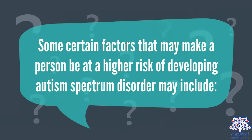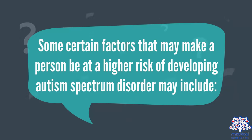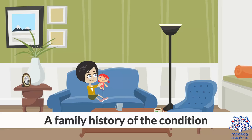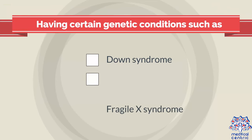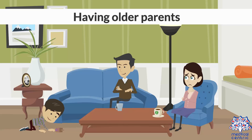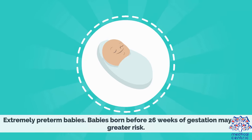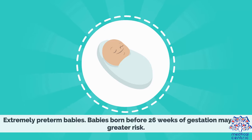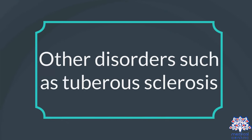Some factors that may put a person at higher risk of developing autism spectrum disorder include: a family history of the condition, being male, having certain genetic conditions such as Down syndrome, Fragile X syndrome, and Rett syndrome, having older parents, extremely preterm babies born before 26 weeks of gestation, and other disorders such as tuberous sclerosis.